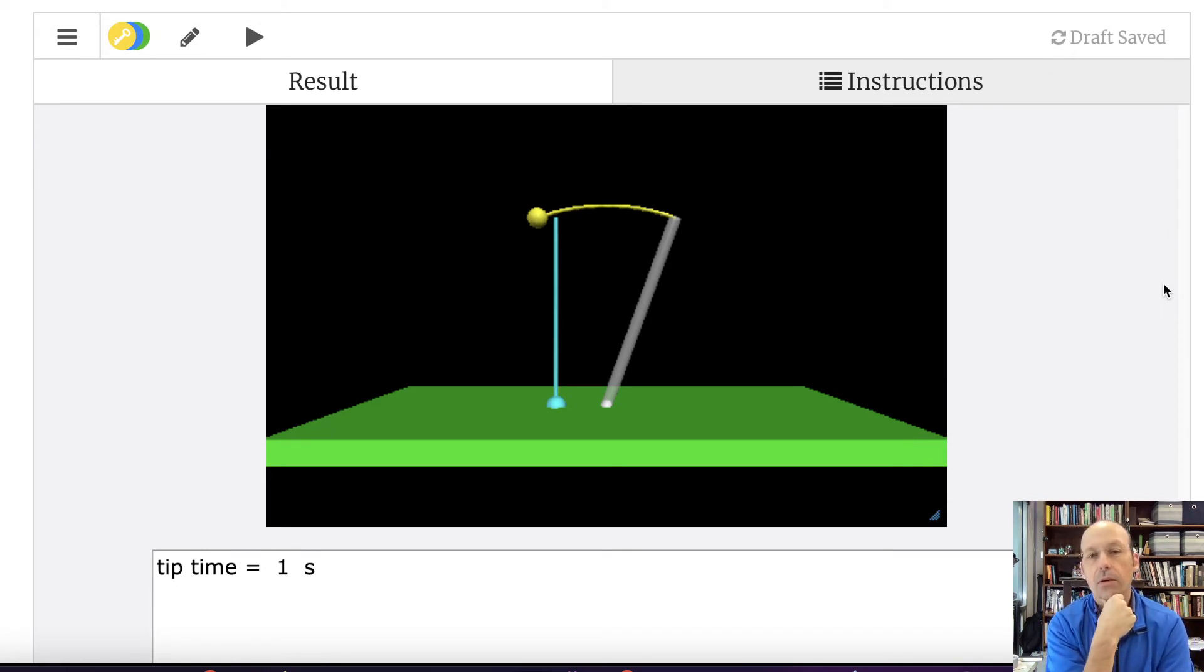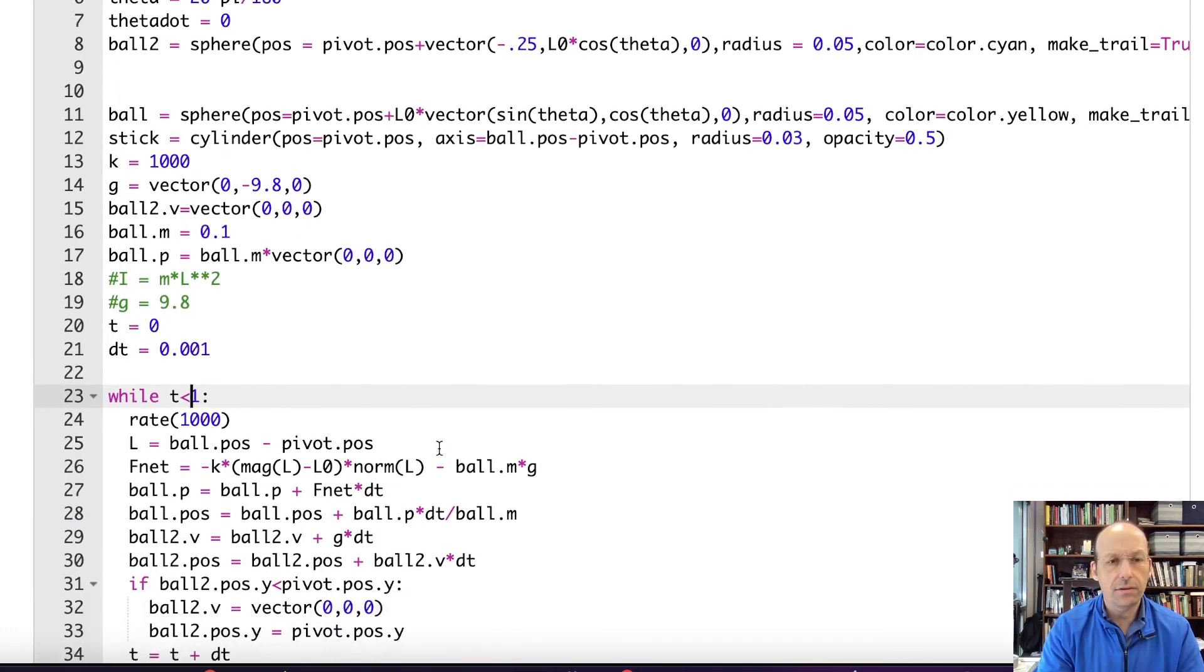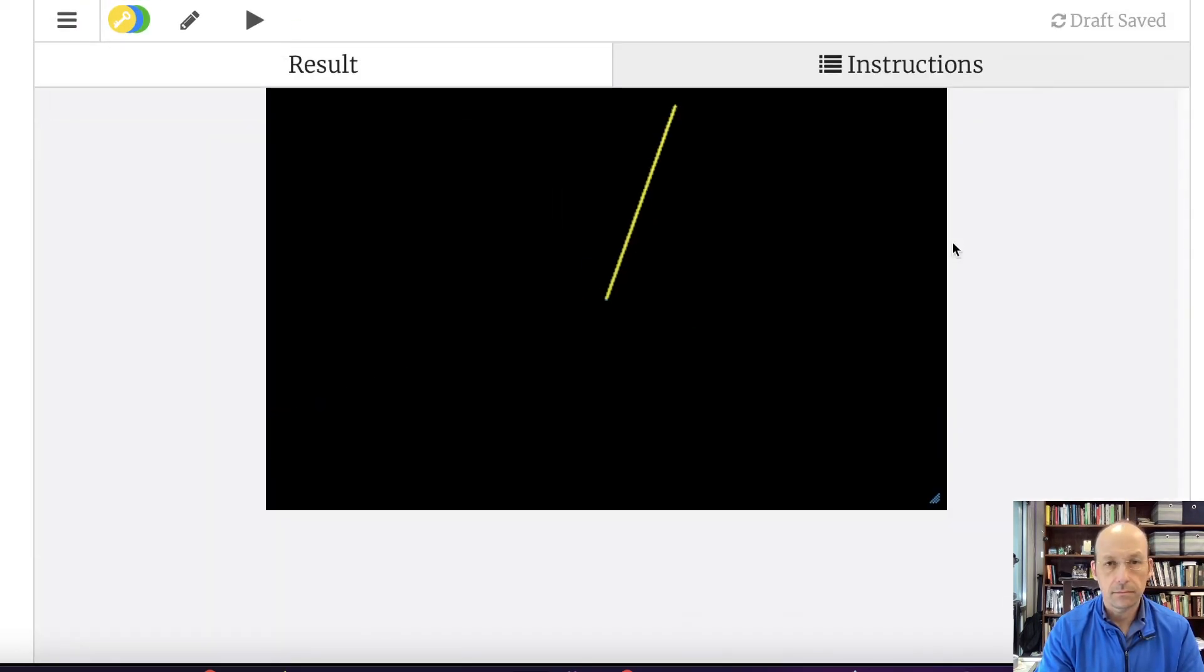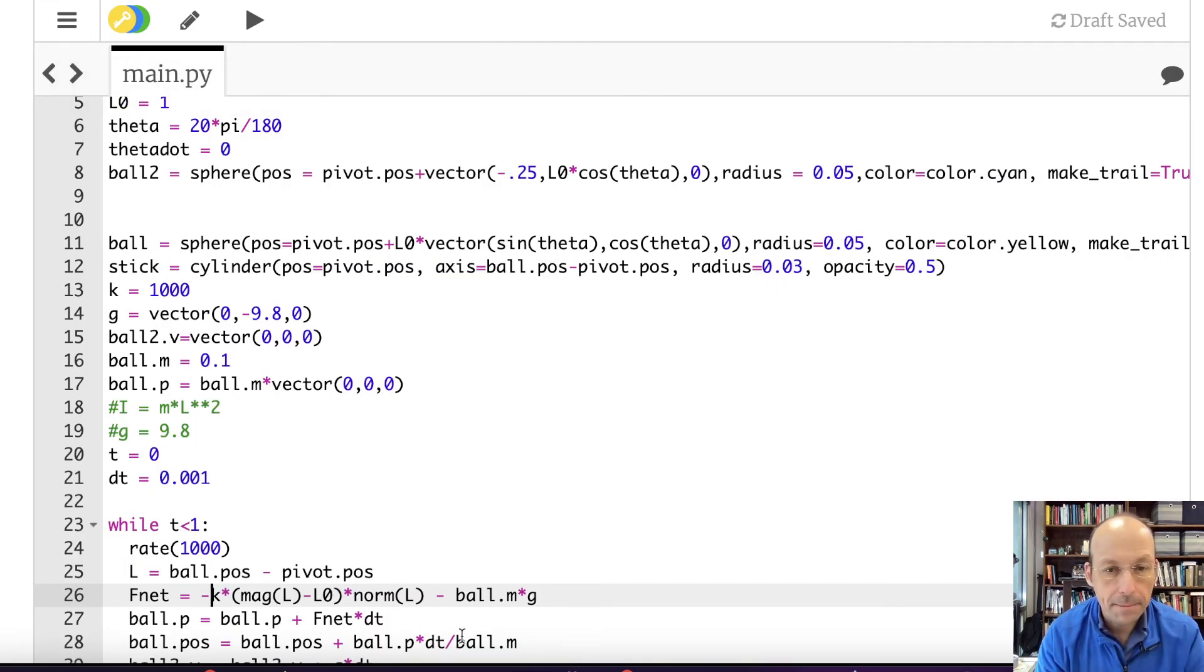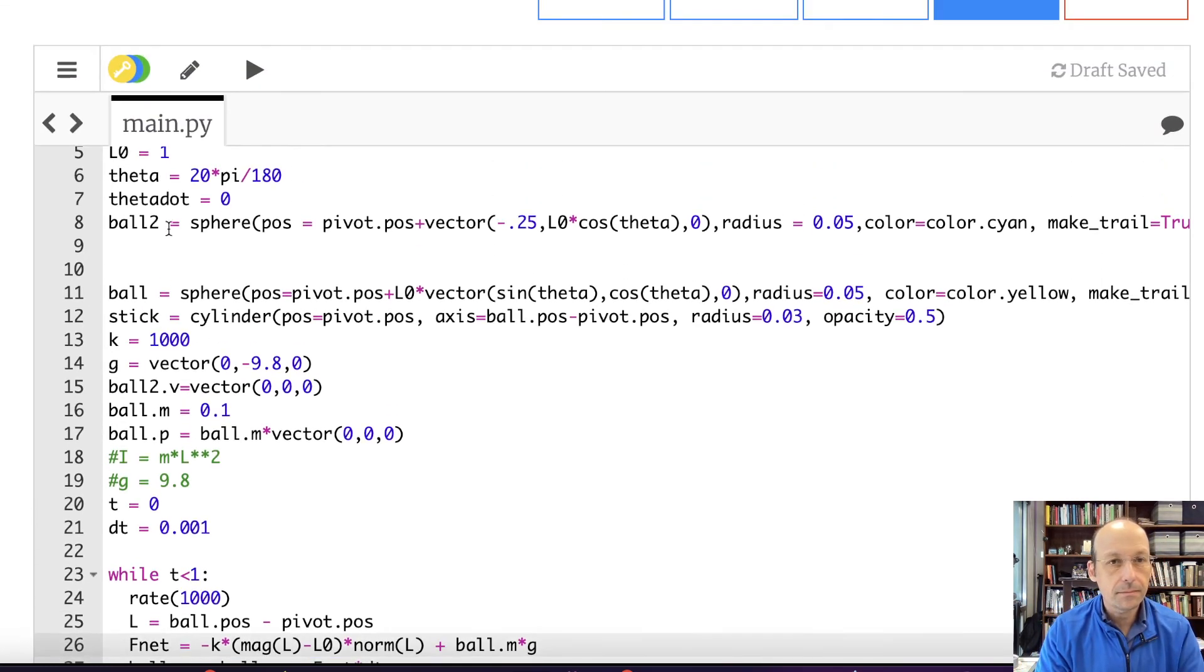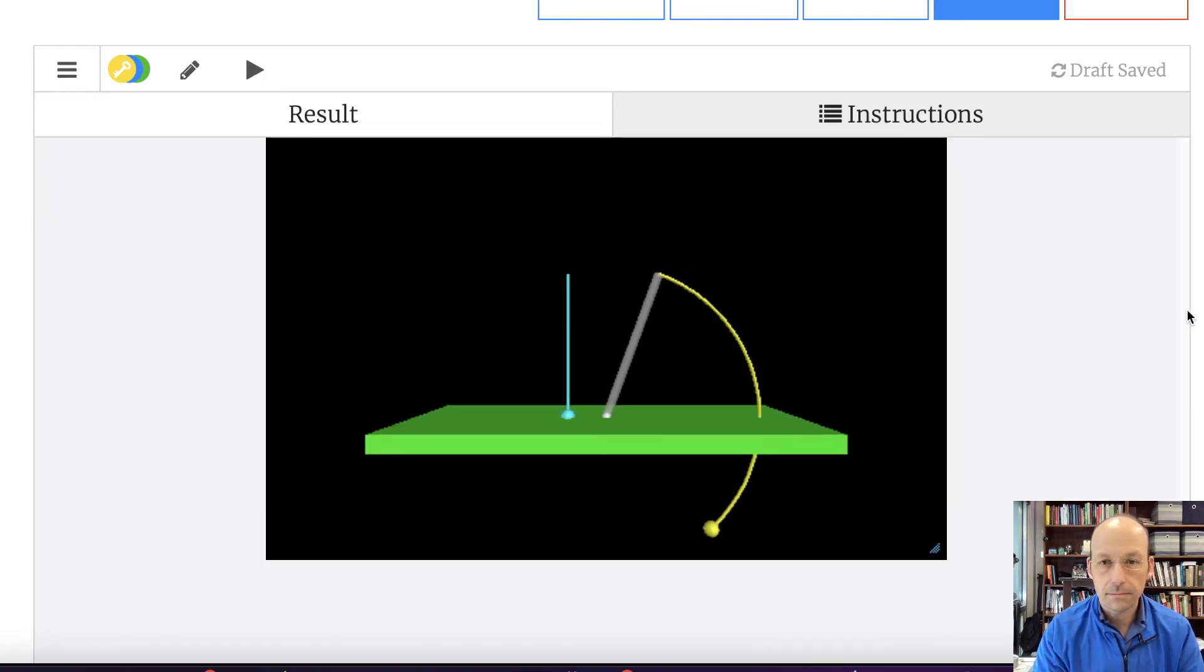That went the wrong way. Why did that go the wrong way? Did I get the sign wrong on this? I always do that. Let's just change the sign of that and see what happens. Nope. That wasn't it. Oh, I see what I did. This right here. Classic mistake. G is the gravitational field vector. M times G is the gravitational force vector. And if I put negative, I have a negative gravitational force pushing in the wrong direction. That was all me.